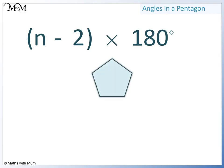So for a pentagon, the number of sides is 5. We subtract 2, and then we multiply by 180 degrees. 5 take away 2 equals 3, and 3 times 180 equals 540.